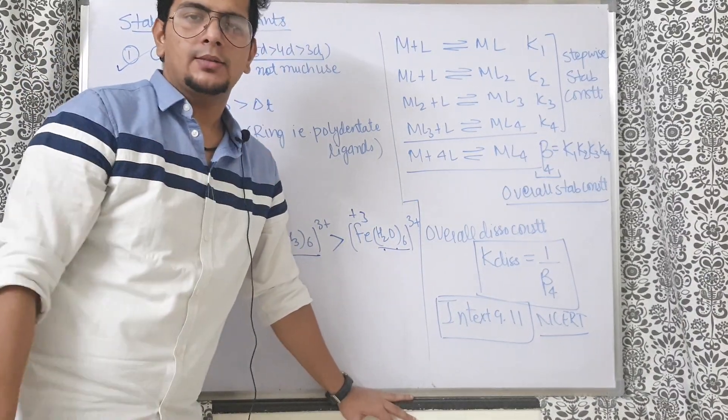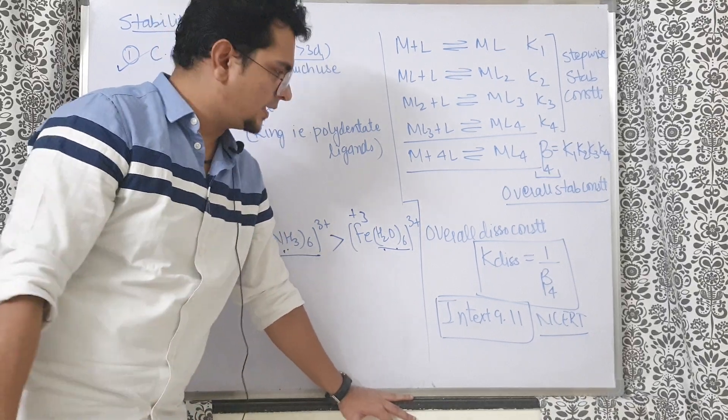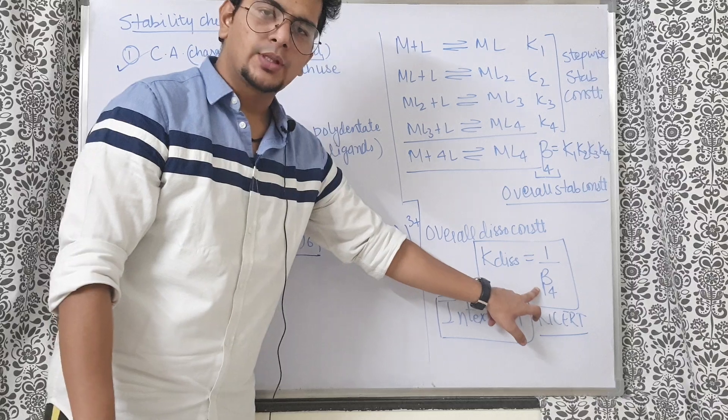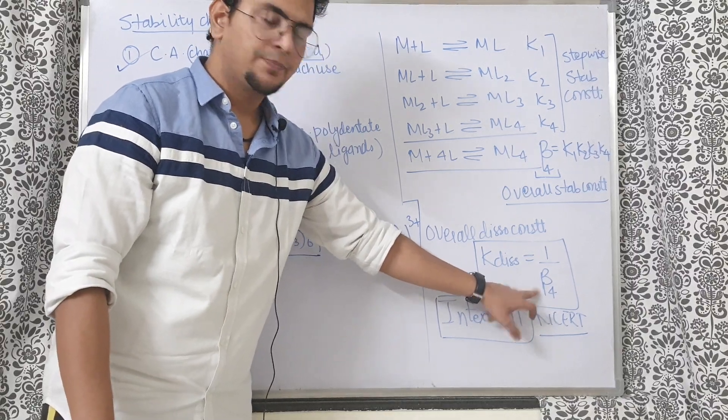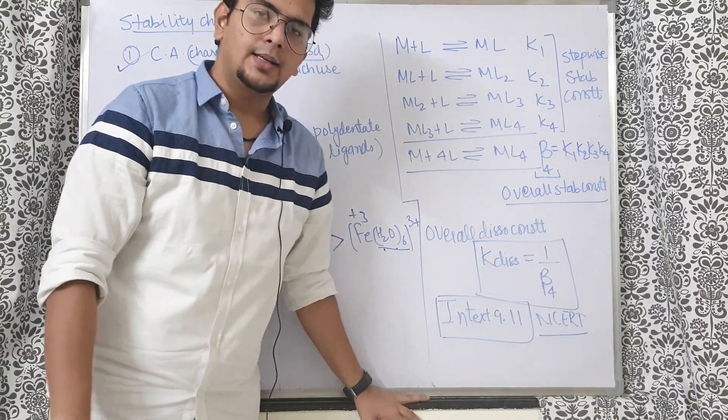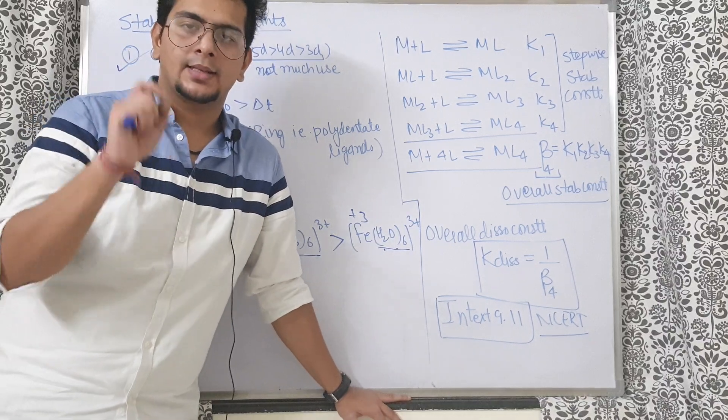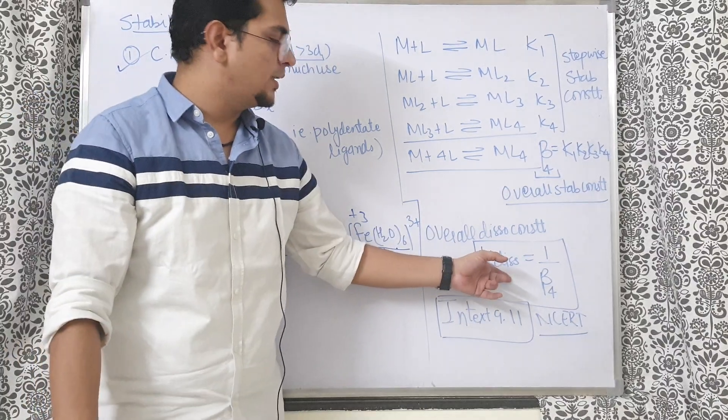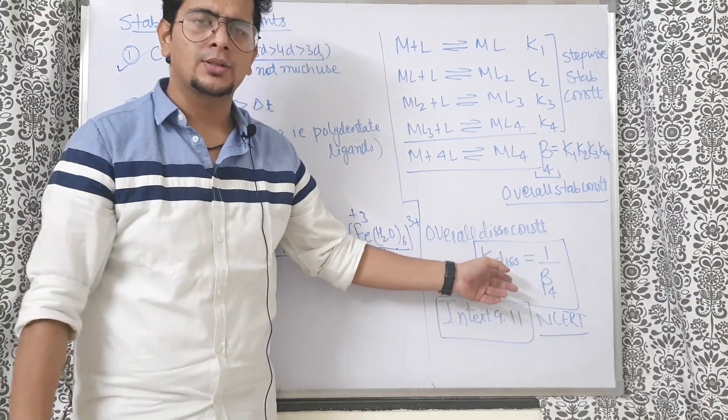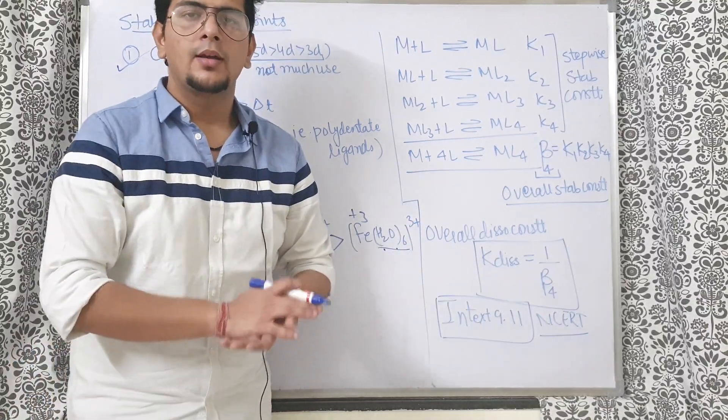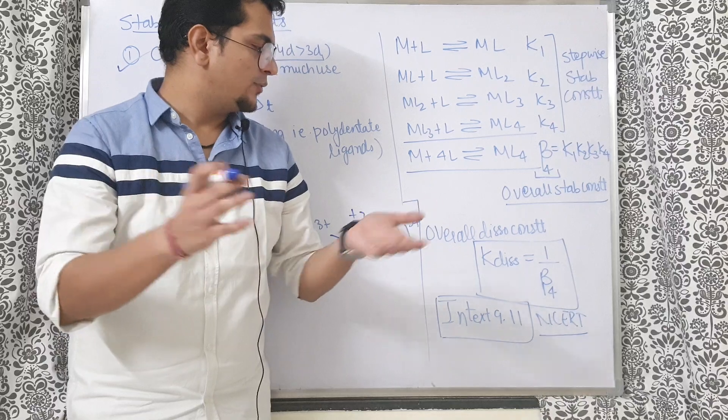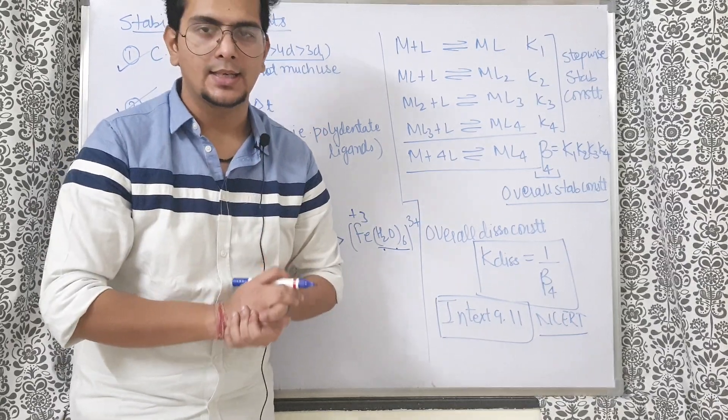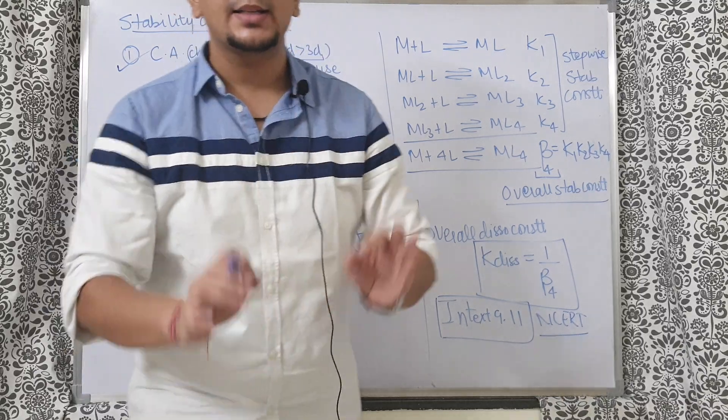So dissociation constant will be 1 by association constant or stability constant. There is a question in the NCERT question 9.11 that you can check. They are giving the dissociation constant, overall dissociation constant, and they are asking the overall stability constant. All you have to do is do the reciprocal of that and you will get the answer very very easily.